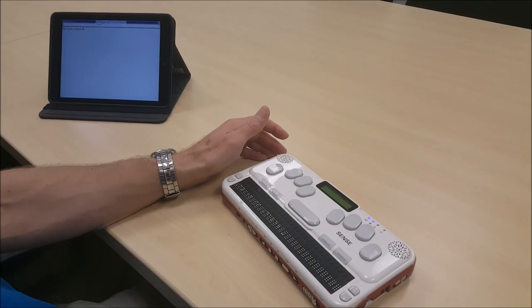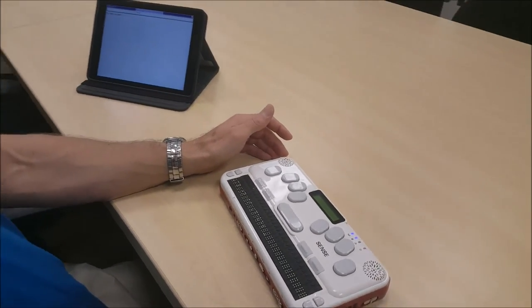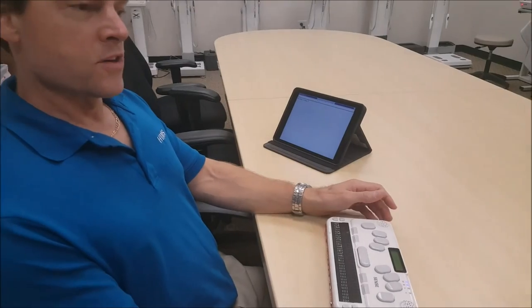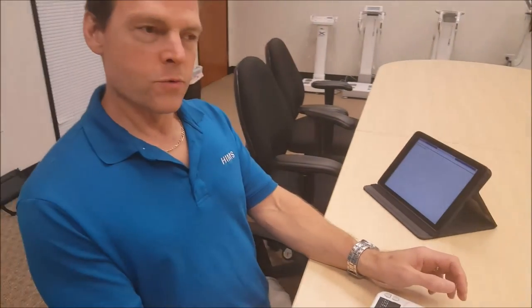And that's how one-handed mode works on the BrailleSense models. This will also work in terminal for screen reader so that if you are using the BrailleSense as a Braille display with your iOS device or your computer, one-handed mode stays in effect. Thank you for tuning in to our tutorial video on the BrailleSense and one-handed mode.